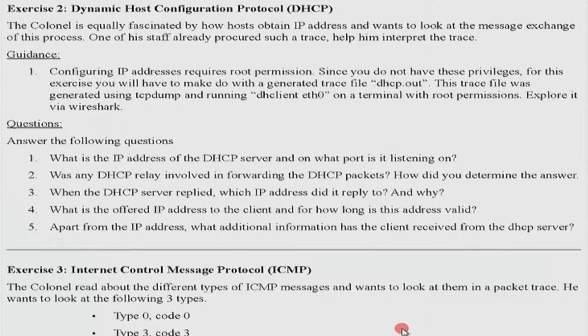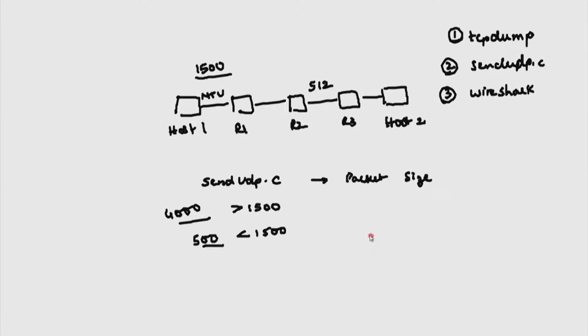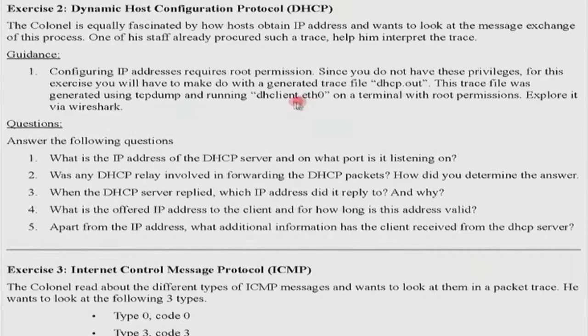DHCP is used to obtain an IP address. Apart from obtaining an IP address, you often get additional information such as who the DNS server is, who your next-hop router is, and so on. Normally to run DHCP you need root permissions. If you have root permissions, you can go ahead and run it. Basically, all you need to do is type in a terminal: DHclient eth0 — not DHCP, because DHclient is the program that executes the DHCP protocol.